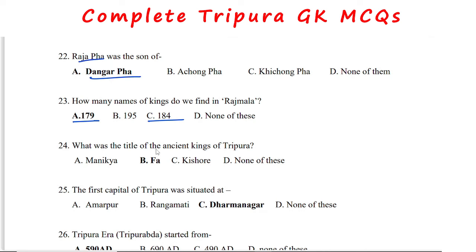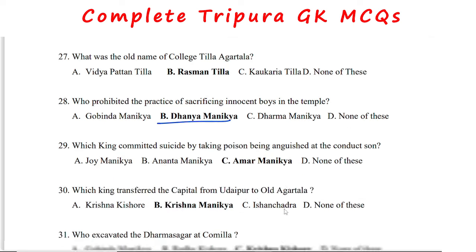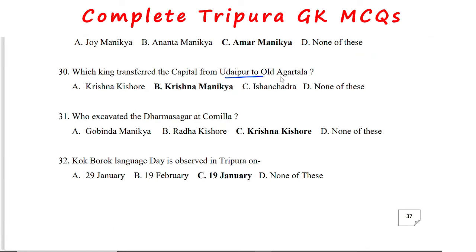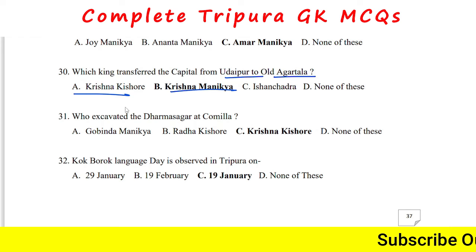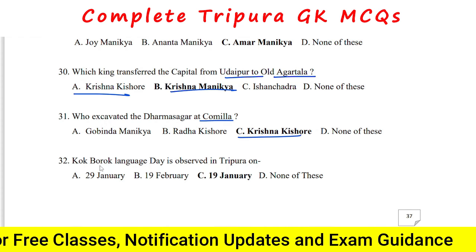The title of ancient kings of Tripura is Fa. The first capital of Tripura was situated at Dharmanagar. The Tripura Era started from 598. Maharaja Dhanamanika prohibited the practice of sacrificing innocent boys in temples. Maharaja Amarmanika committed suicide by taking poison. Maharaja Krishnamanika transferred the capital from Udaipur to Old Agartala, and later to present Agartala.